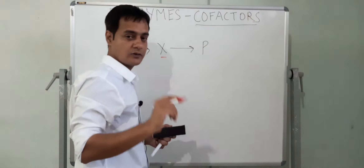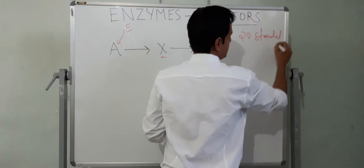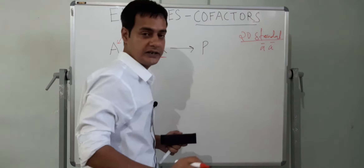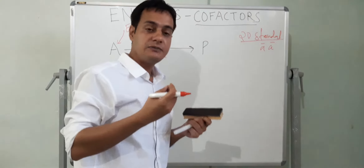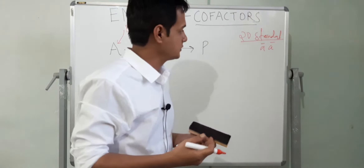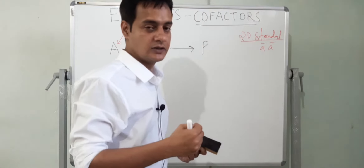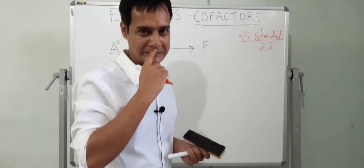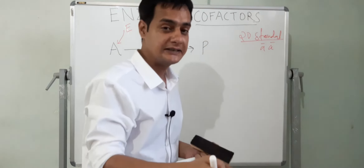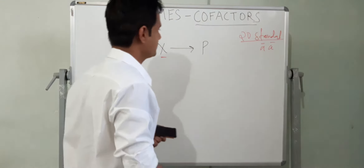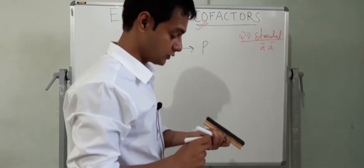In our body there are only 20 standard amino acids. Since we have only 20 standard amino acids, we have only a limited number of functional groups. So the repertoire of chemical reactions which an enzyme can catalyze is limited. In many cases, we need additional molecules to help the enzyme catalyze the reaction, and these additional molecules are known as cofactors.